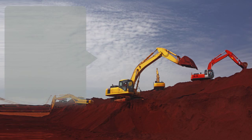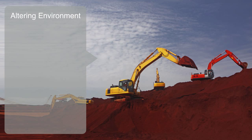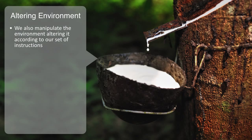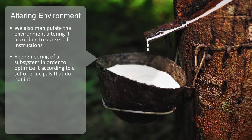In trying to overcome some environmental constraint, we also manipulate and alter the environment according to our set of instructions. An artificial system then is one that is designed according to some set of principles that do not integrate with the natural processes, and thus work to disintegrate the natural environment. This might also be called hacking — the re-engineering of a subsystem within a larger integrated system in order to optimize it according to a set of principles that do not integrate with the overall pattern of organization, and thus work to disintegrate the macro system and reduce its sustainability.